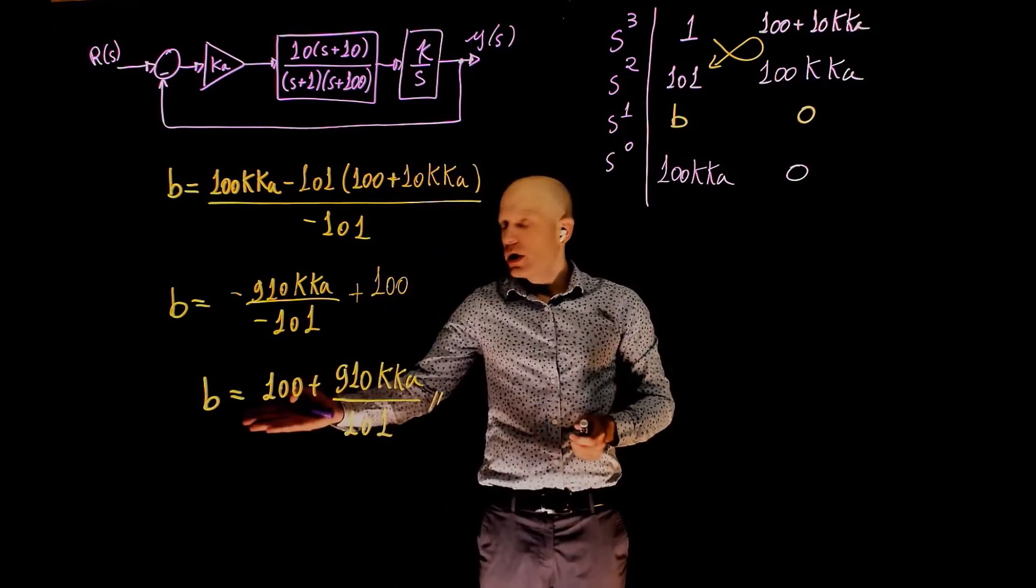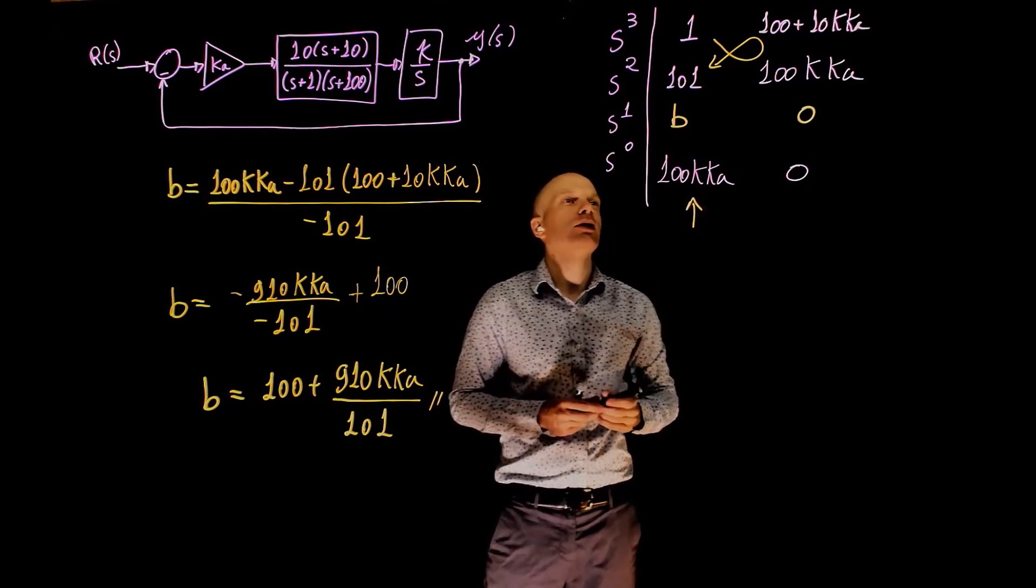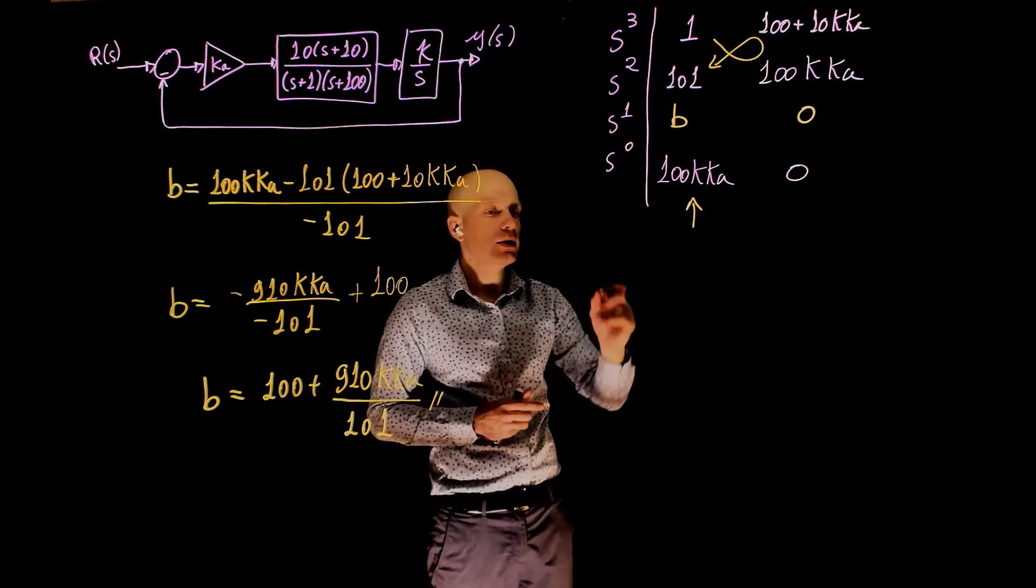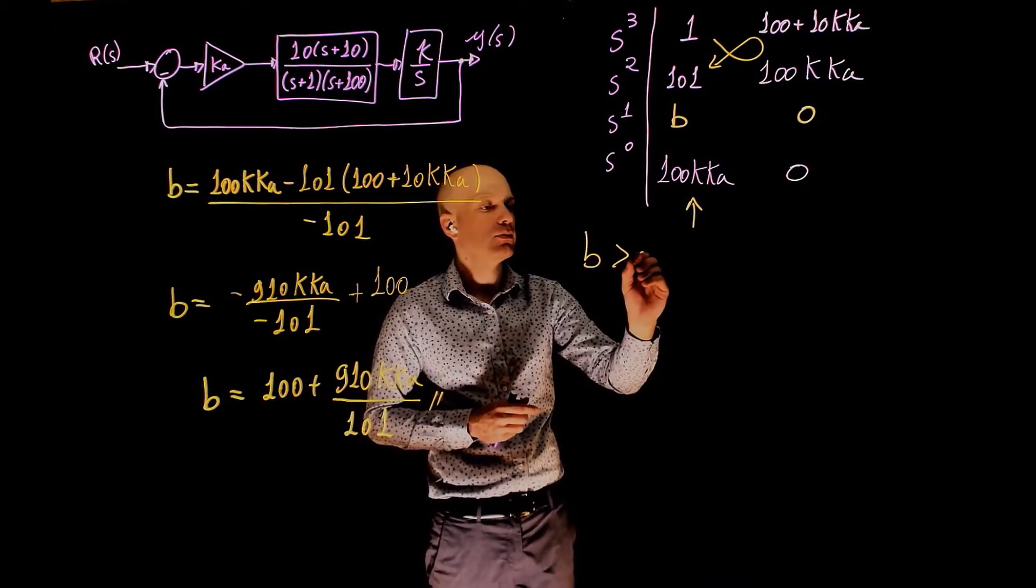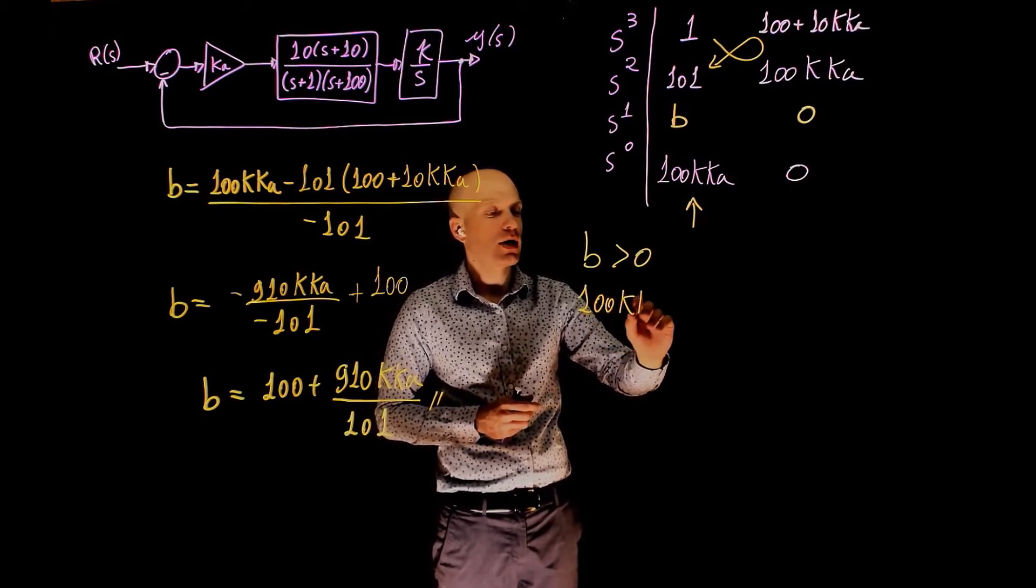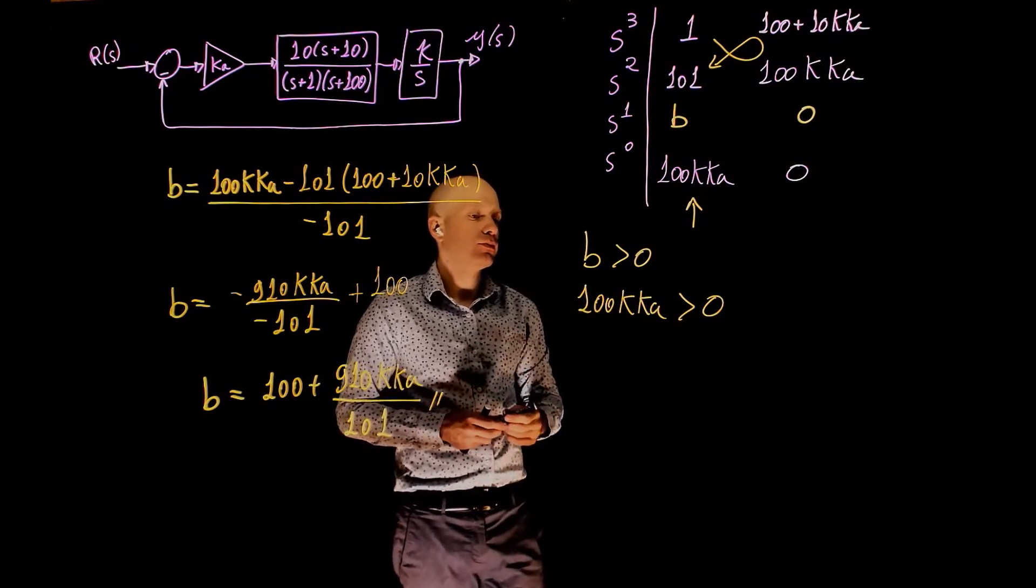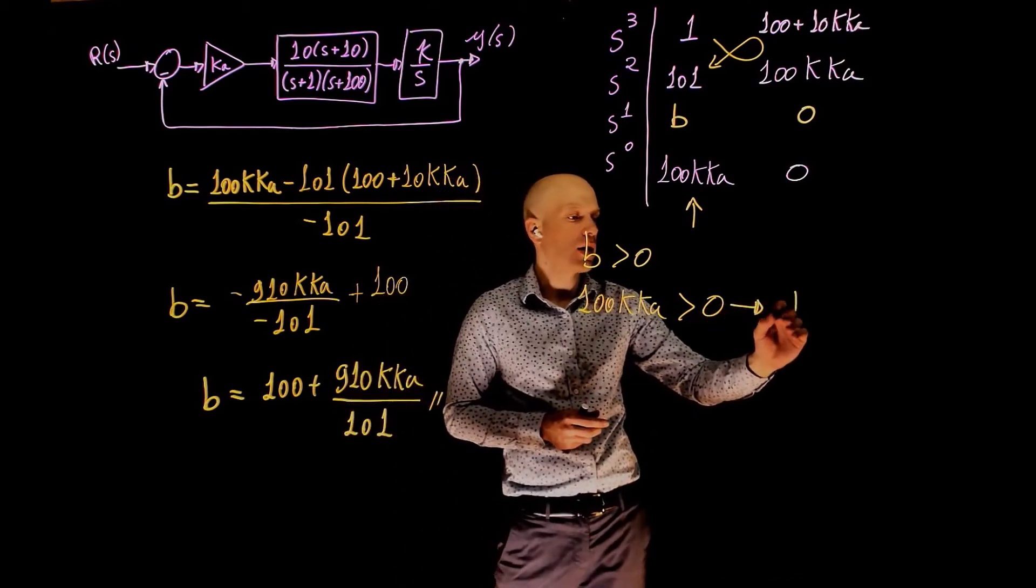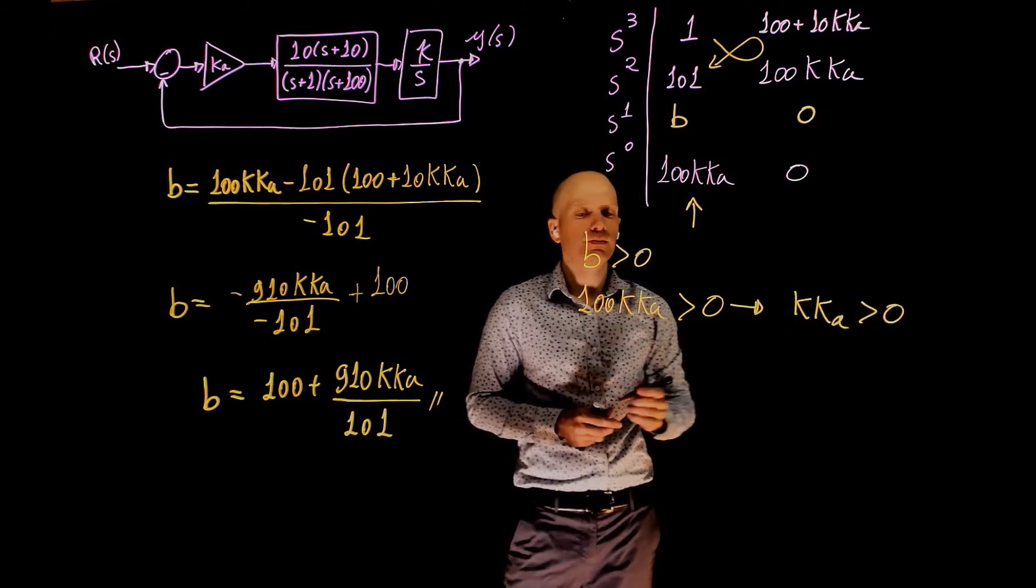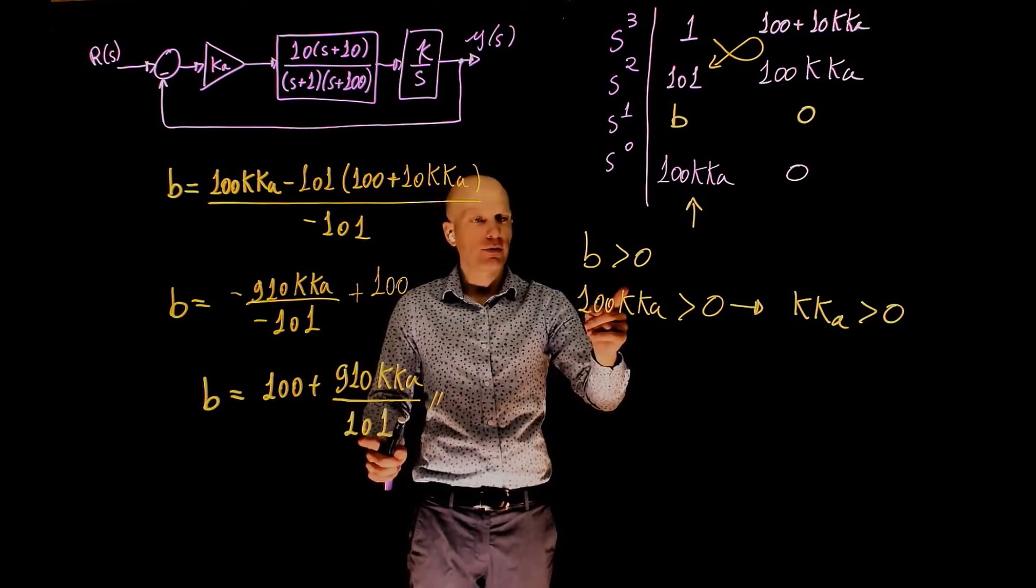Alright, so here we have the value of b. We can now proceed and evaluate the stability by looking at the sign changes in the first column. Now from this it's clear that b needs to be greater than 0. And also 100kka needs to be greater than 0. So from this second condition, kka needs to be greater than 0.